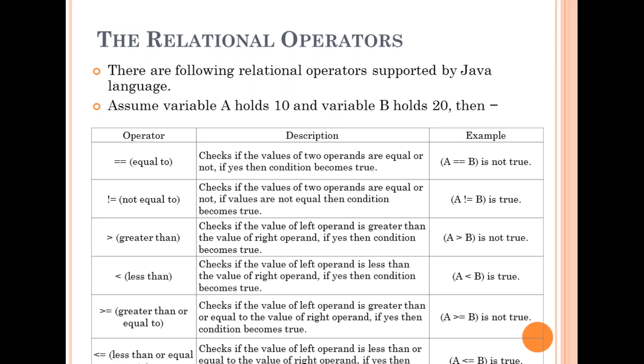Not equal to checks if the values of two operands are equal or not. If the values are not equal then condition becomes true. Greater than checks if the value of left operand is greater than the value of right operand. A greater than B is not true, as 10 is never greater than 20.